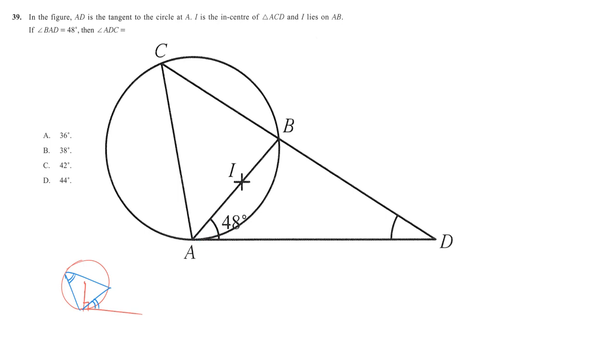Now they give us 48 degrees touching AB and not touching this line, which means this angle. So this angle is also 48 degrees.